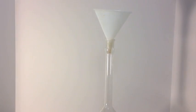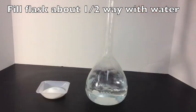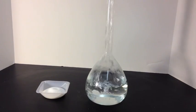Then you fill the flask about halfway with water. This is a one liter flask, a thousand milliliters. Fill it up about halfway, just enough water to get all of the salt dissolved.